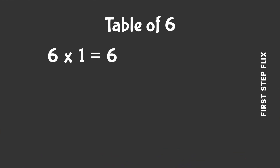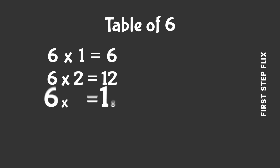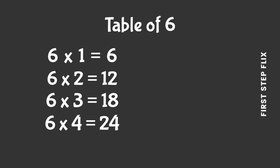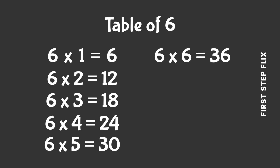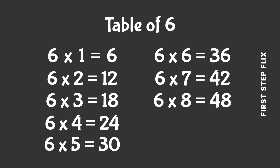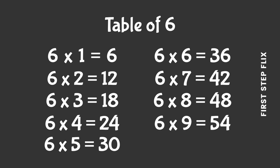Let's repeat. 6 ones are 6, 6 twos are 12, 6 threes are 18, 6 fours are 24, 6 fives are 30, 6 sixes are 36, 6 sevens are 42, 6 eights are 48, 6 nines are 54, 6 tens are 60.